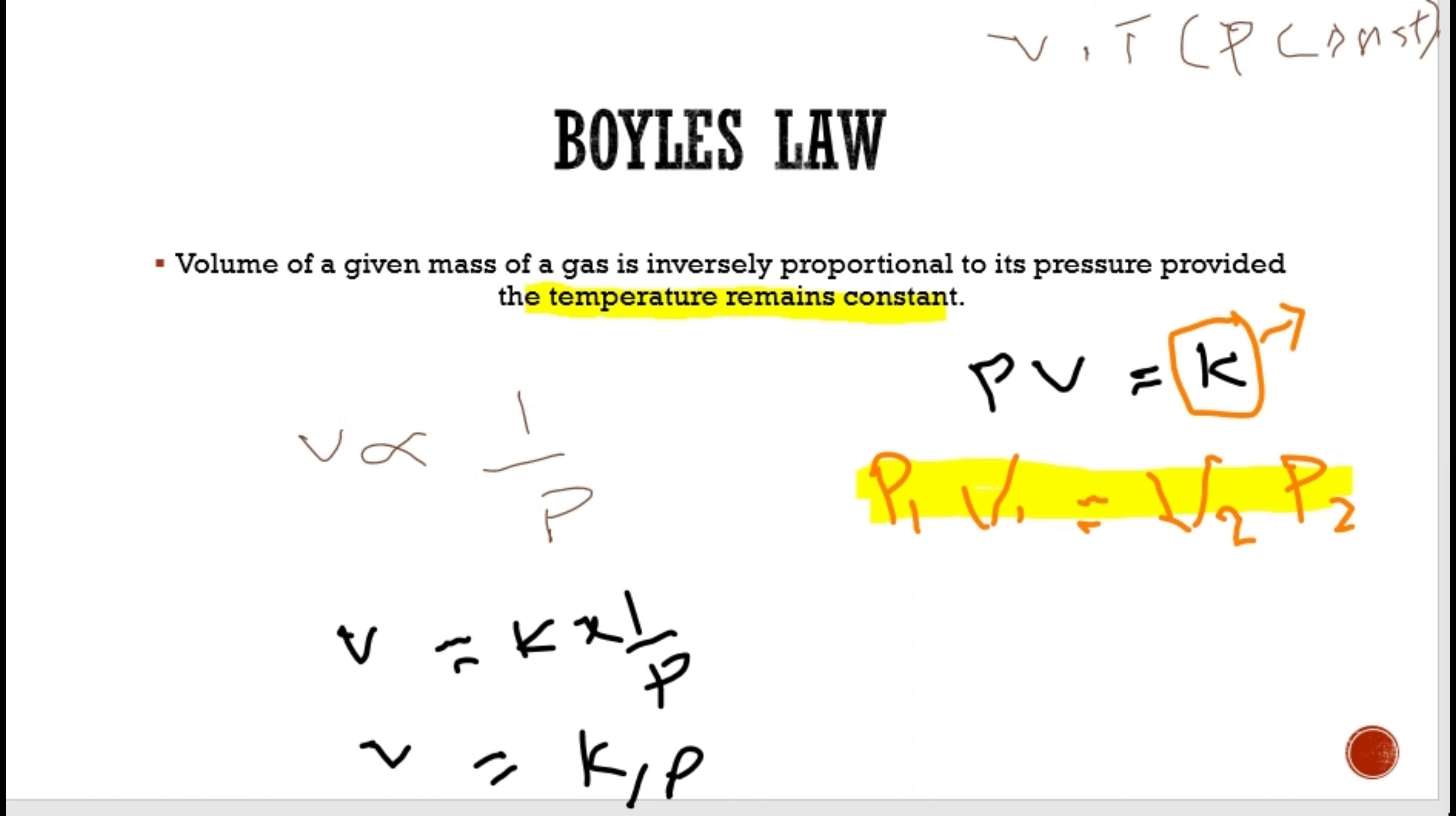दोनों का product हमेशा constant रहता है जब हम temperature को constant रखते हैं। Given mass of gas का मतलब है amount of the gas change नहीं करनी है। जब P को P1 से increase करके P2 कर रहे है तो volume decrease हो जाएगा V1 से V2 तक। Paper में पूछा जाने वाला question है define करें और उसको derive करें।